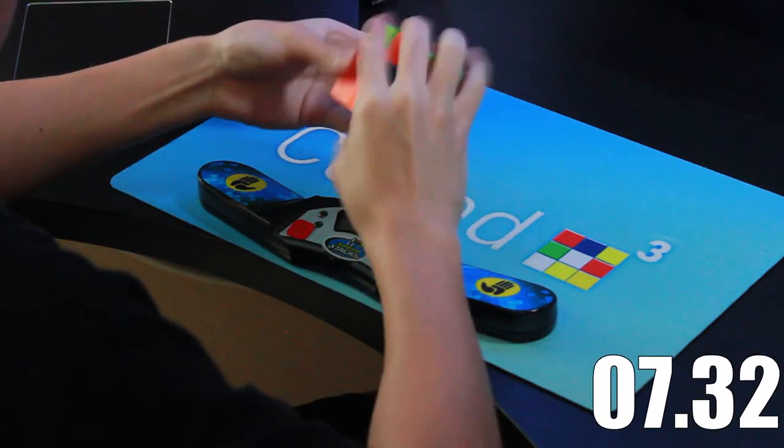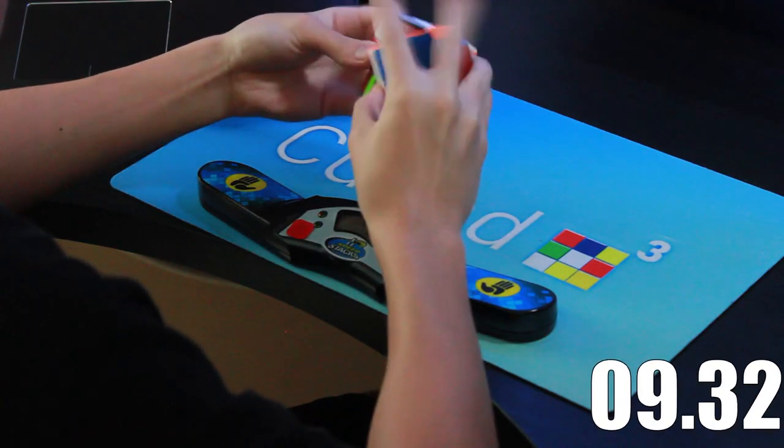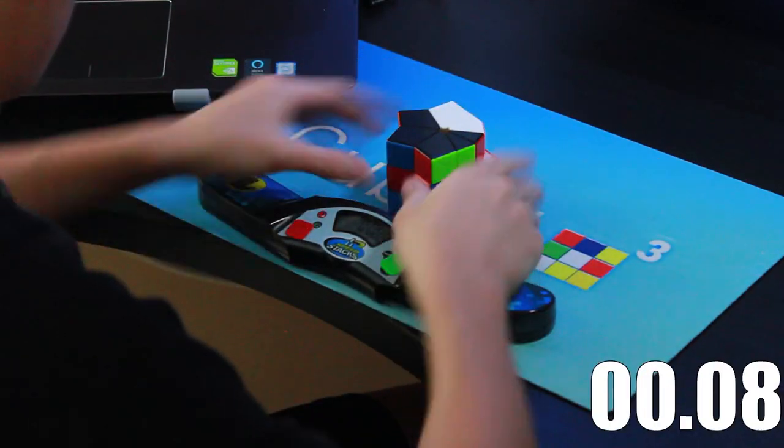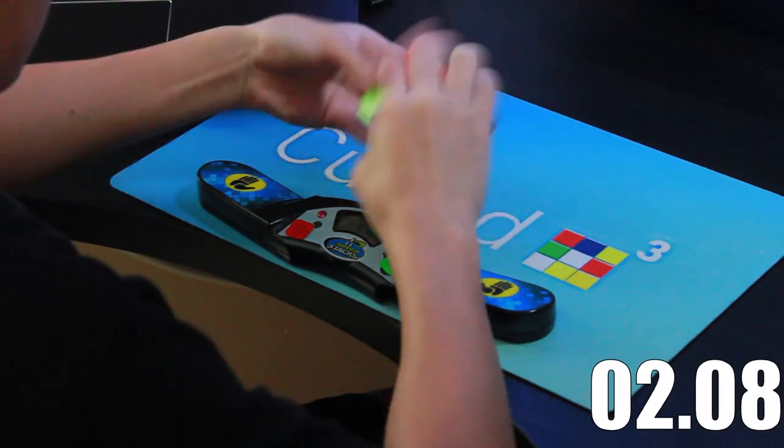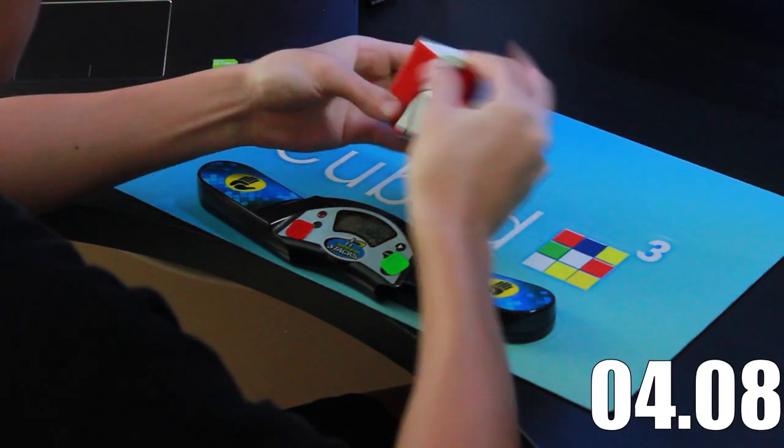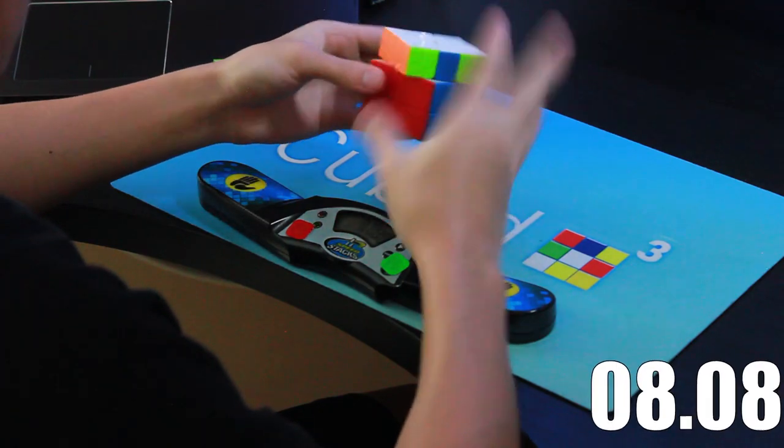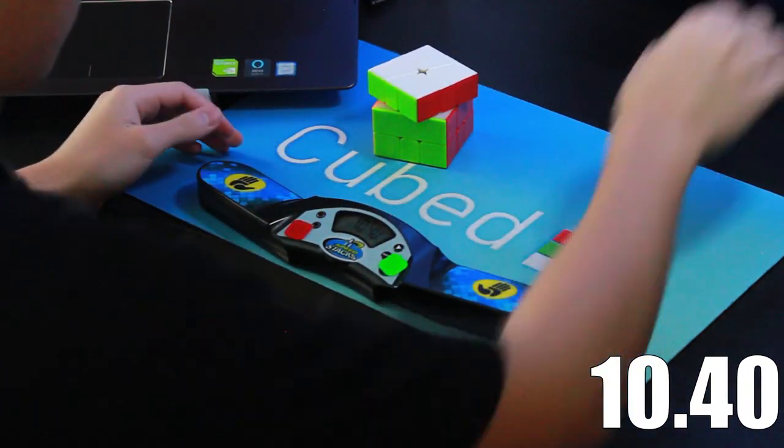So I totally encourage those of you out there who want to get faster at square one to learn these algs, because they are definitely essential. As for where to find and learn these algs, I have been using algdb for this whole process, but there are probably some more out there as well. I'll be sure to leave a link to algdb in the description of this video, and if you guys know any other alg websites for square one, be sure to leave them down below in the comments.